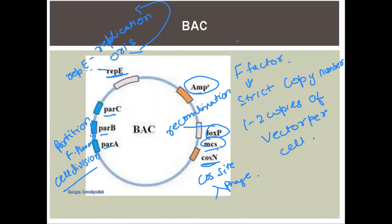So this is the Bacterial Artificial Chromosome vector. It can accommodate inserts of up to 300 kilobase pairs and is used for genome analysis. One useful derivative of BAC is the cosmid, which is an important derivative that includes lambda phage DNA with a cos-site.